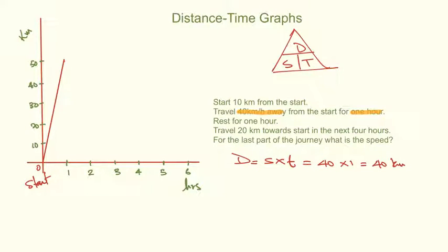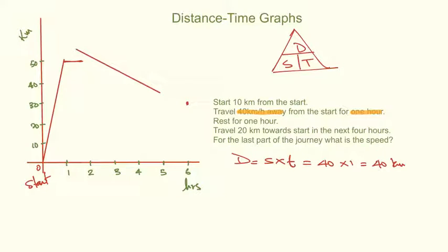We're only resting for one hour, which brings us from one to two hours. Then last of all, it says travel 20 kilometers towards the start for the next four hours. 20 kilometers will only bring us down to 30 — we're not going all the way back. We're all the way up at 50, so it just brings us down to 30. After two hours, four hours later will be six hours. So that gives us a straight line coming down to the 30-kilometer mark at six hours.